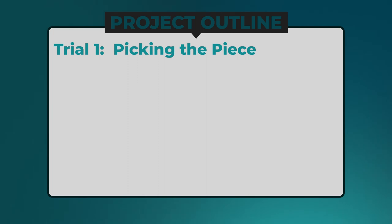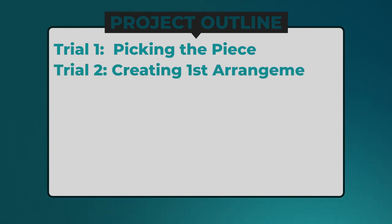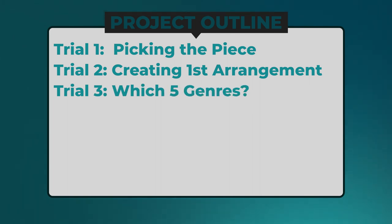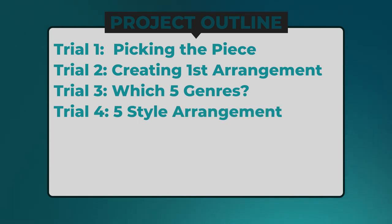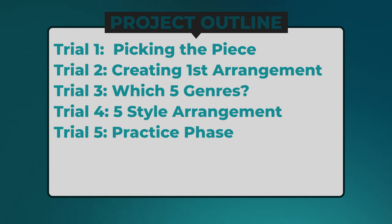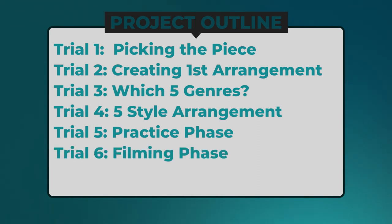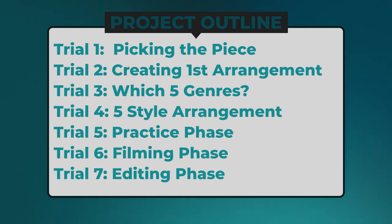Trial 1: picking the piece. Trial 2: creating the simplified arrangement. Trial 3: coming up with the 5 styles idea and picking the 5 genres. Trial 4: arranging the piece for the 5 styles. Trial 5: practicing my arrangement. Trial 6: filming in 5 different locations. And finally, Trial 7: editing the entire thing.